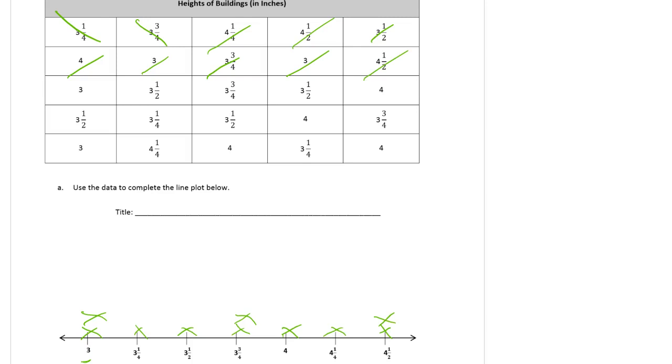4 1⁄2 goes there. 3. 3 1⁄2. 3 3⁄4 goes here. 3 1⁄2 goes there. 4 gets its second mark. 3 1⁄2 gets its fourth X. 3 1⁄4 gets its second X. 3 1⁄2 gets another one. That one's kind of going sideways as it goes up, but it's still okay.